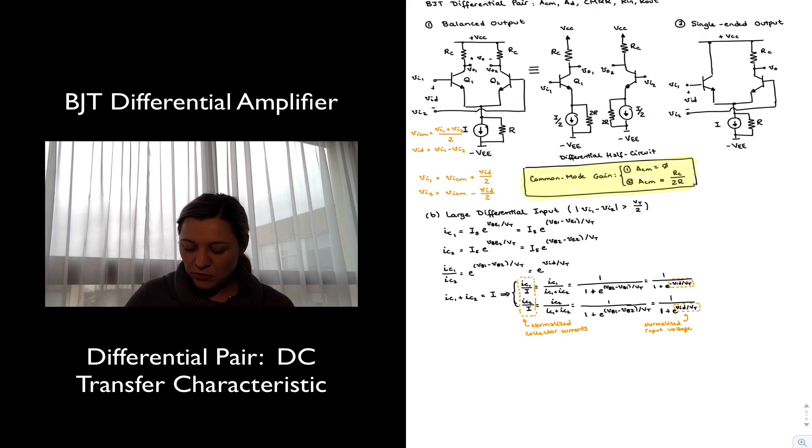So I can plot these two equations, basically the variables normalize collector current 1 IC1 over I, with respect to VID over VT, the normalized input voltage, and the same thing for IC2 over I, the normalized collector current for Q2, with respect to the normalized input voltage. And that will give me the DC transfer characteristic for this circuit.